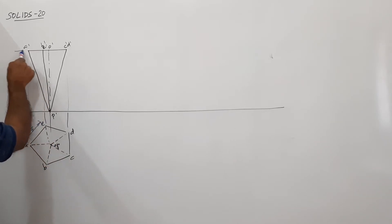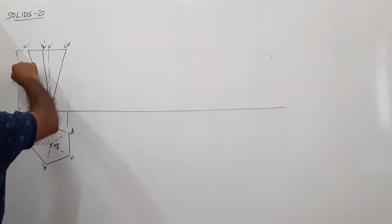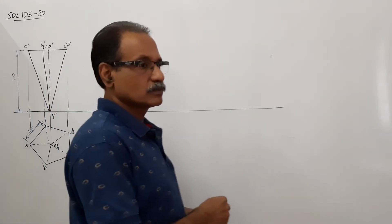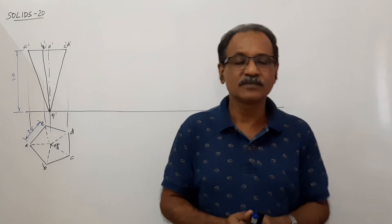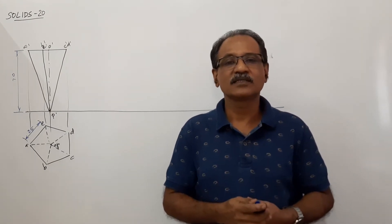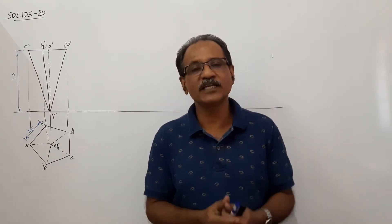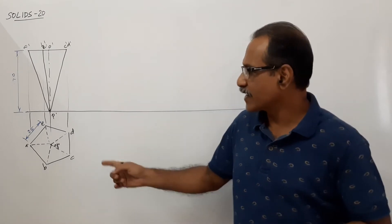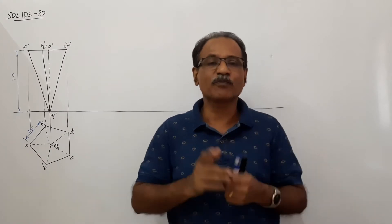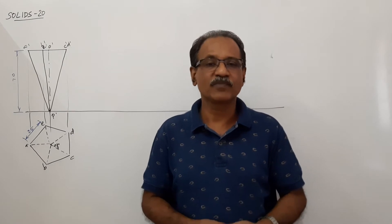Suspended at a corner of base, suspended above a corner of base, in such a way that the axis makes 35 degrees to HP. I repeat, a pentagonal pyramid 25 mm side of base and 70 mm axis, suspended about a corner of base in such a way that the axis makes 35 degrees to HP.